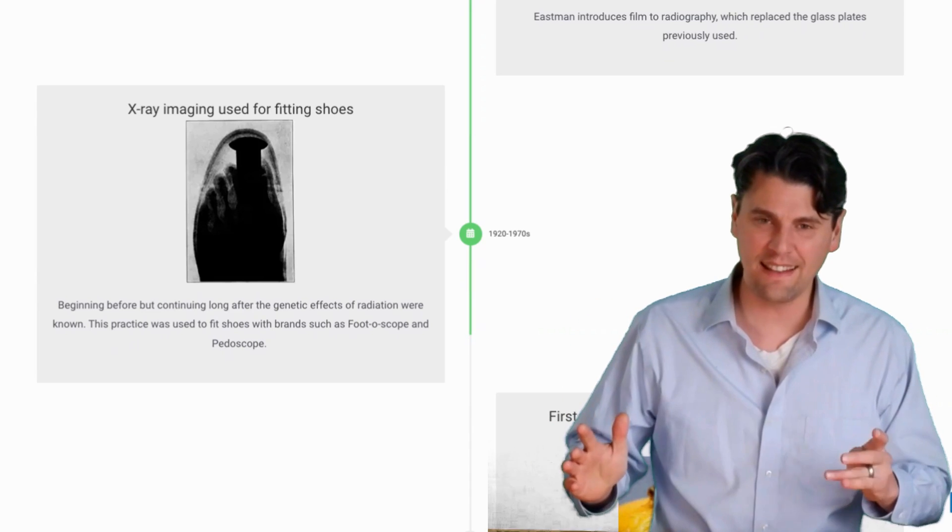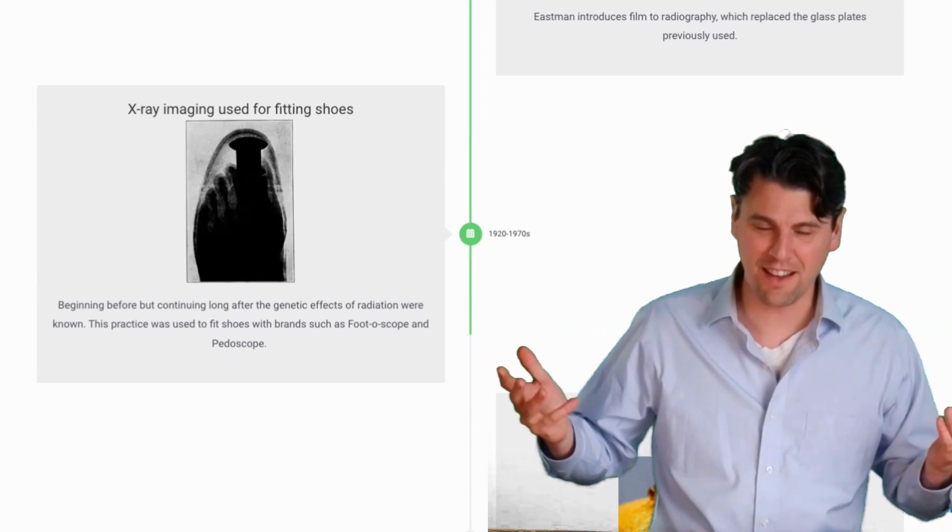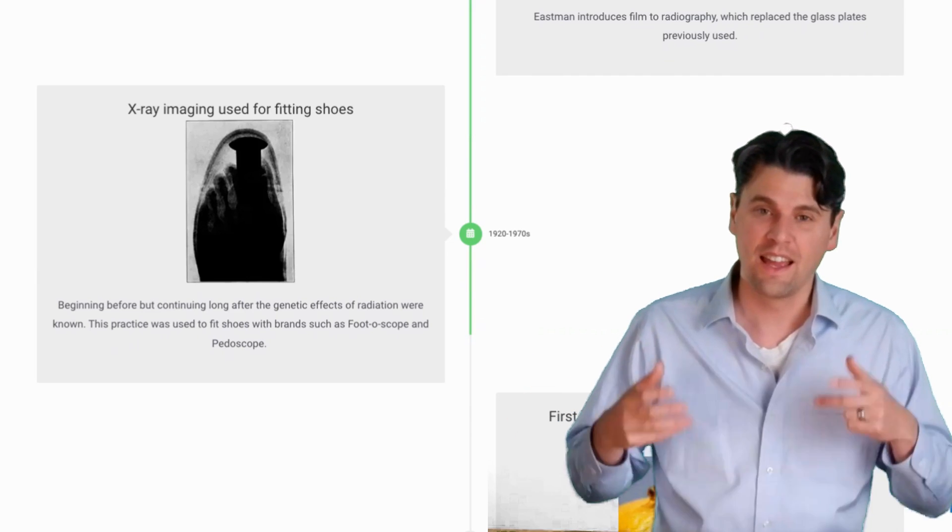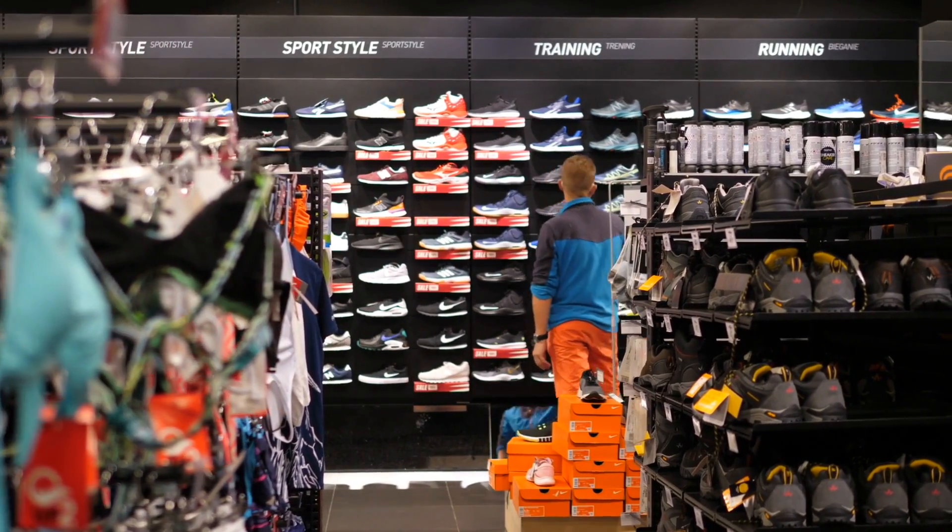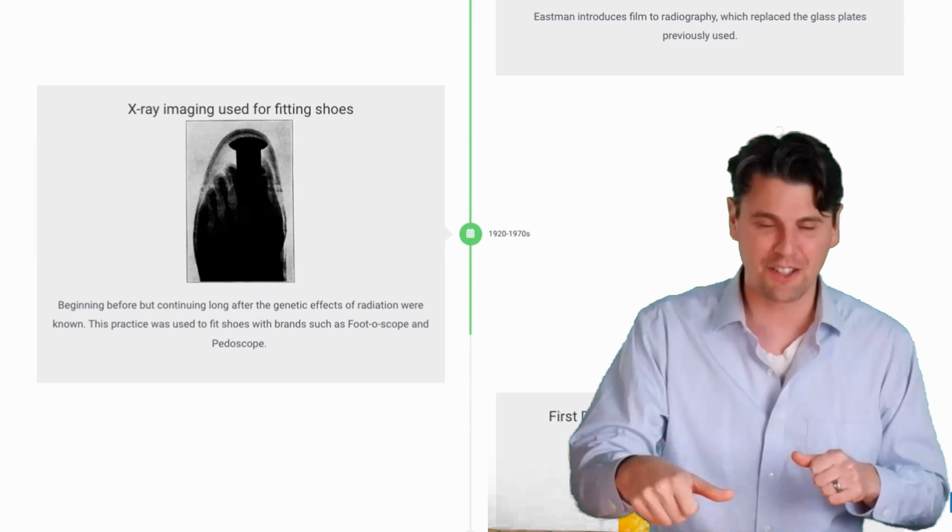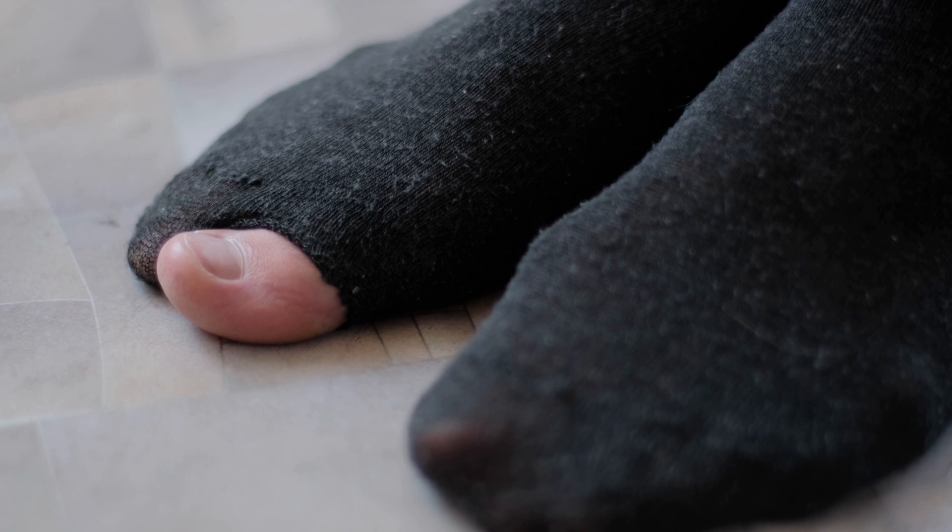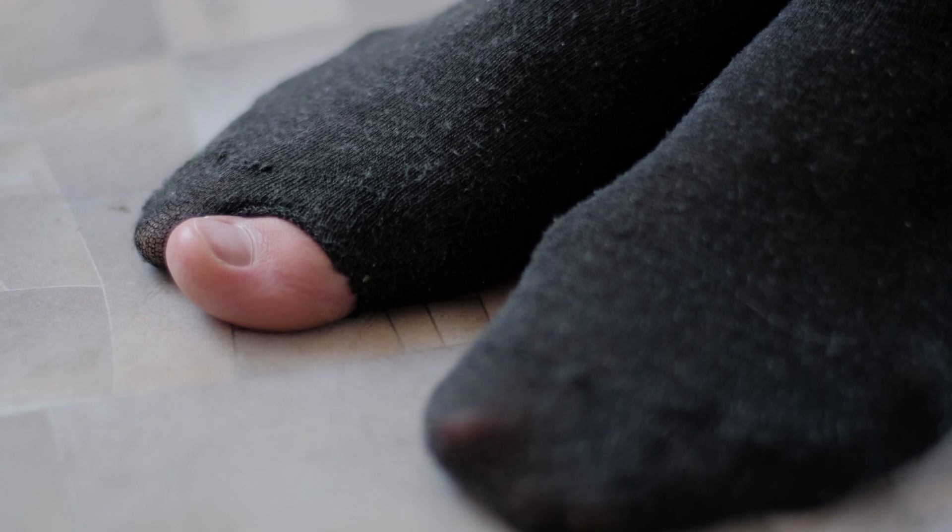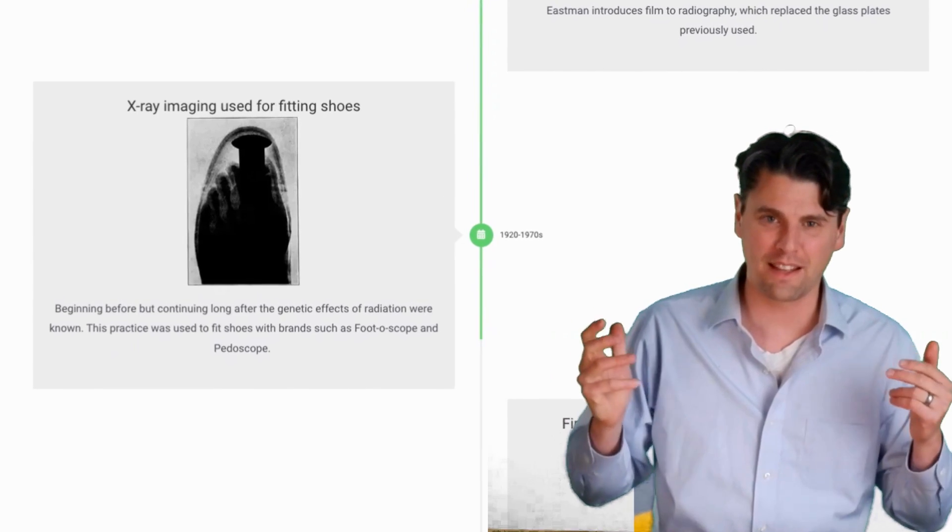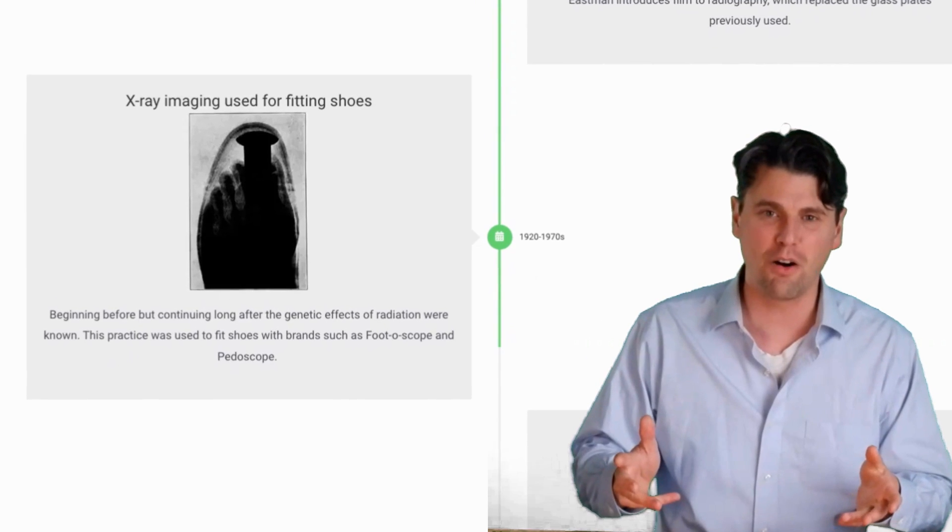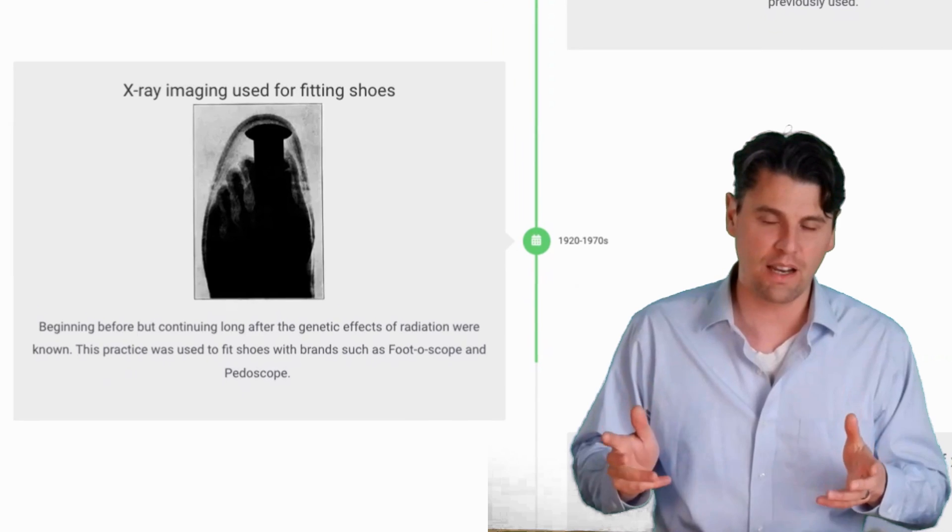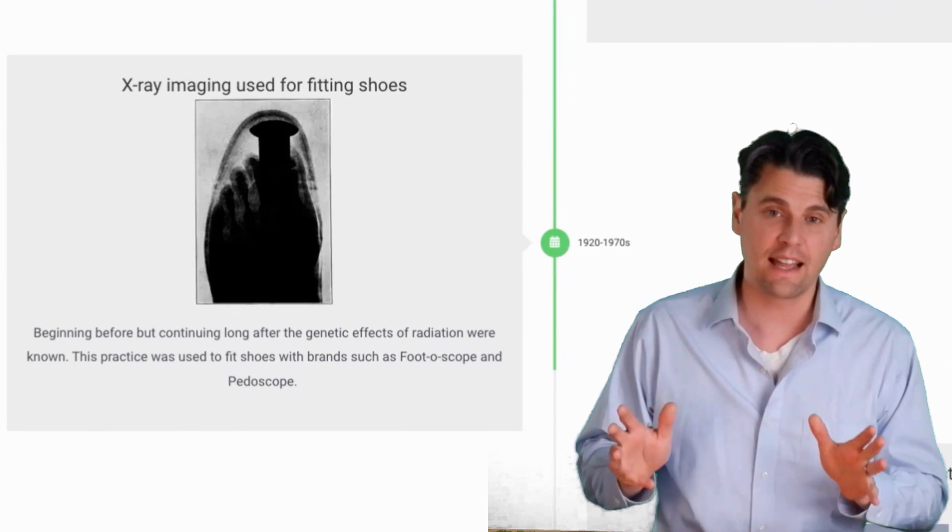From the 1920s all the way up to the 1970s, the generation that I was born in even, people were using X-rays in shoe stores in order to check the fit of a shoe. This is something you could clearly palpate by touching your thumb, see where the big toe is. But at the time, there was a novelty of these X-ray machines. These X-ray machines had names like the footoscope or the pediascope, and they were used far after X-rays were demonstrated to have negative impacts.